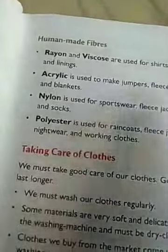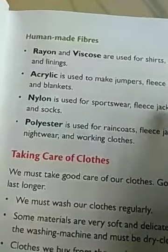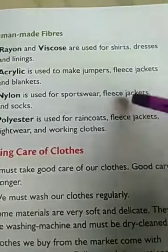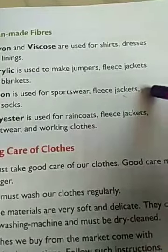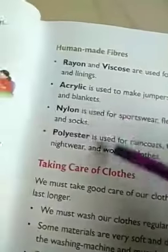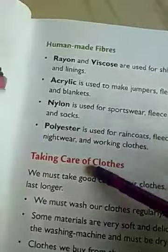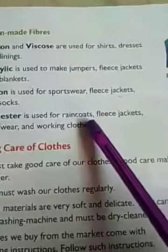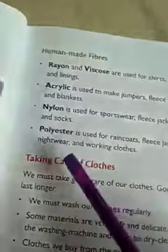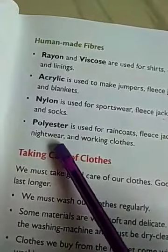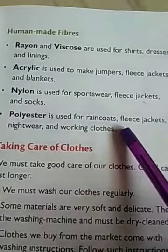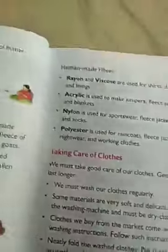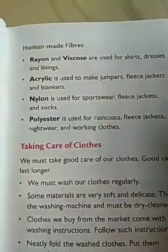Nylon is used for sportswear and fleece jackets — fleece jacket means a woolen-type jacket — and socks. Polyester is used for raincoats, fleece jackets, nightwear and working clothes. These are all known as human-made fibers.